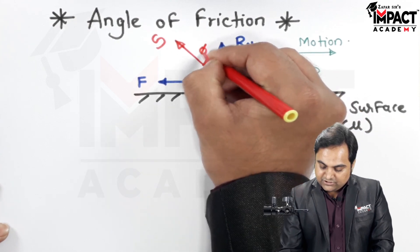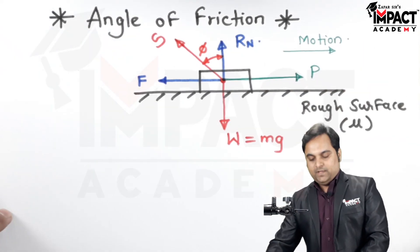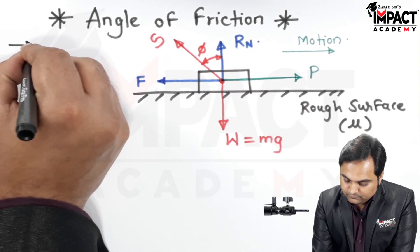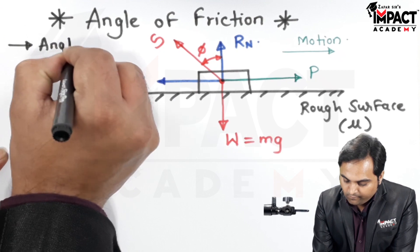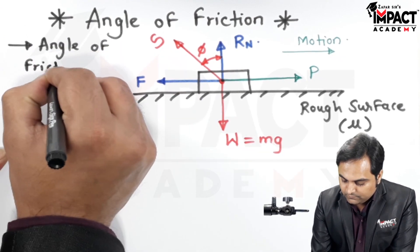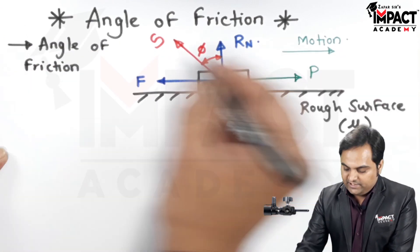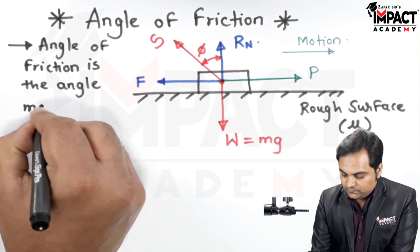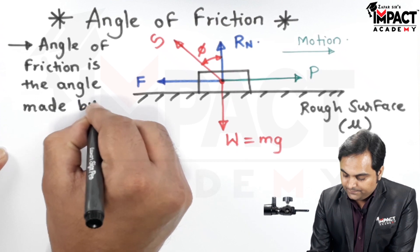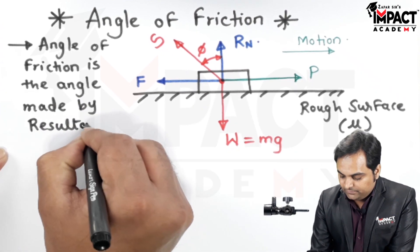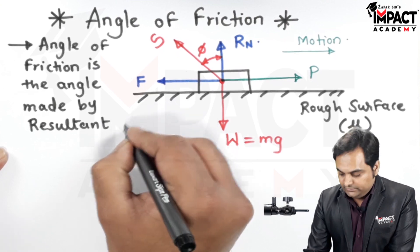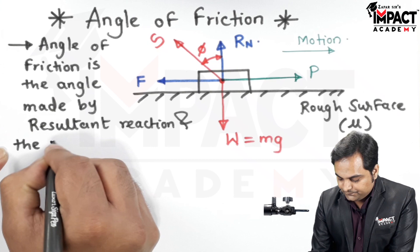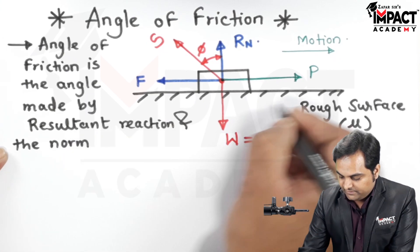So I will quickly write here that angle of friction, also called as friction angle, is the angle made by or the angle between the resultant reaction and the normal reaction which is offered by the floor.